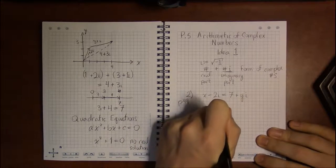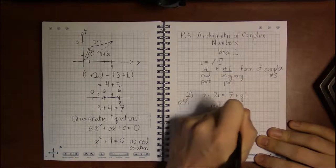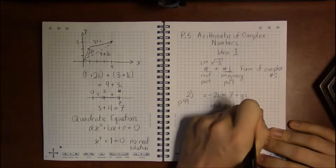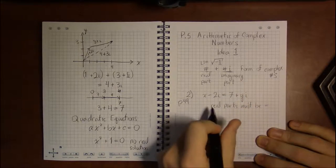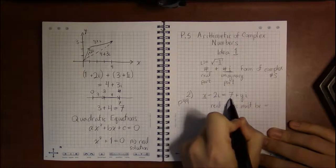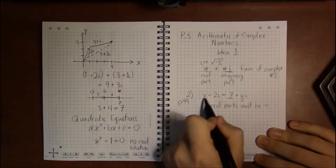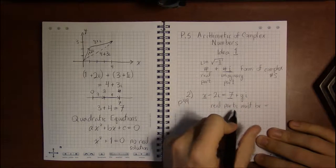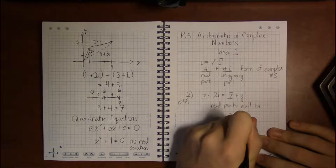Given that we have these two complex numbers, well, in order for two complex numbers to be equal, the real parts must be equal. So in other words, here are the two real parts, 6 and 7. So if these two complex numbers are equal, then x has got to be equal to 7. The real parts have to be equal.